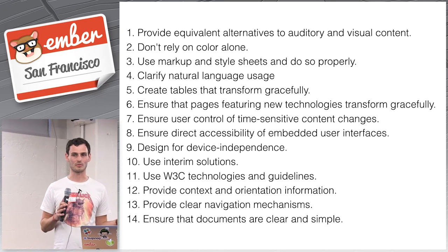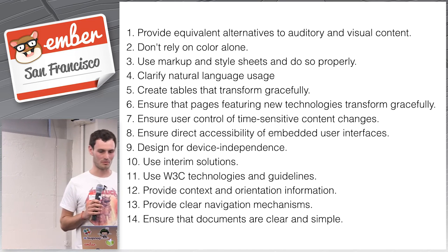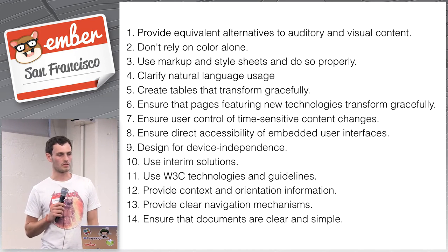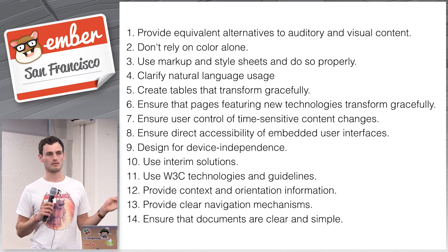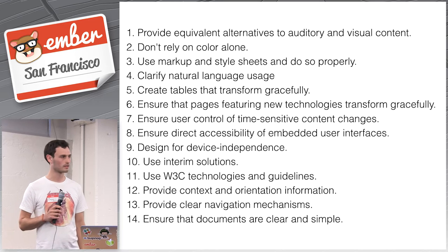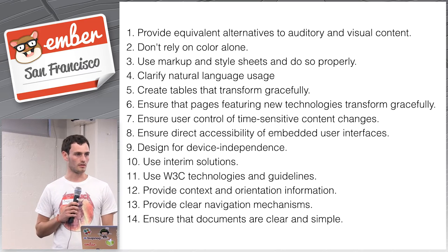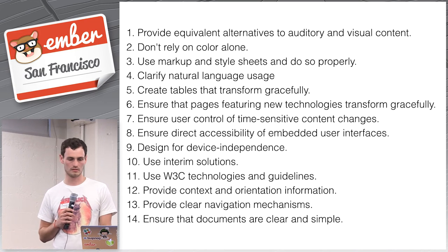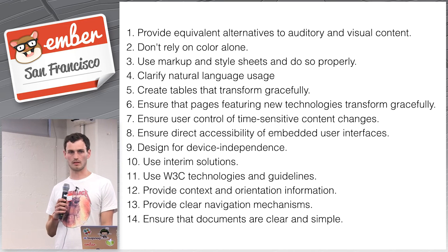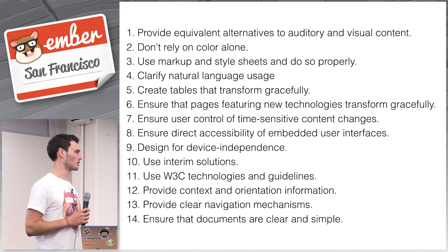If you provide an abbreviation that's not clear, there's markup for expanding what it means. Fifth: create tables that transform gracefully — you can use the TH field to indicate headings, and use THEAD, TBODY, and TFOOT to group rows. Simple stuff, but it actually helps a lot. Sixth: ensure pages featuring new technologies transform gracefully — can your website work without style sheets, without JavaScript? And are your event handlers device independent?